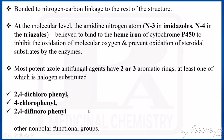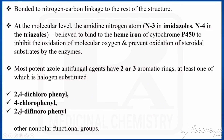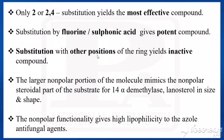The substitution should be at the second or fourth position — that may be chlorine or fluorine, giving 2,4-dichlorophenyl, 4-chlorophenyl, or 2,4-difluorophenyl groups. Substitution by fluorine or sulfonic acid also yields potent compounds. Substitution at other positions of the ring yields inactive compounds, as only second and fourth position substitution is effective.